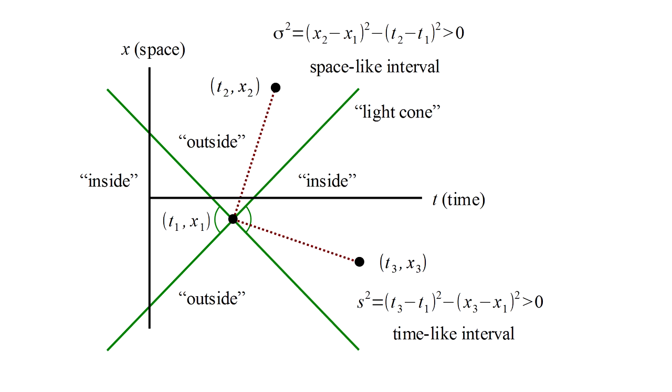Sigma squared is the square of the difference of the space coordinates minus the square of the difference of the time coordinates. We call this a space-like interval.